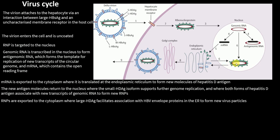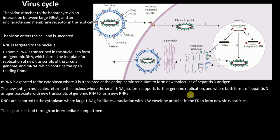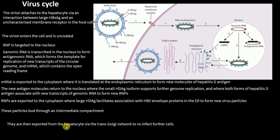The new RNP is exported to the cytoplasm, where large HDAg facilitates its association with HBV envelope proteins — large, medium, and small HBsAg — at the endoplasmic reticulum to form new virus particles. These new virus particles then bud through an intermediate compartment, the Golgi complex, and are exported from the hepatocyte via the trans-Golgi network to reinfect further cells.